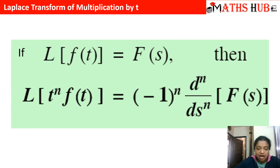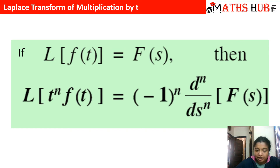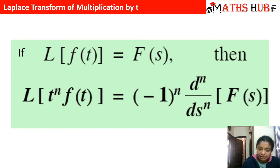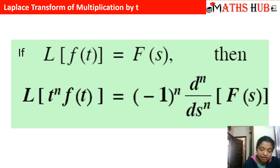Now the next property: the Laplace transform of multiplication by t. The rule says that if Laplace{f(t)} = F(s), then Laplace{t^n · f(t)} = (−1)^n times the nth derivative of F(s). That means multiplying by t once requires taking the first derivative, multiplying by t² requires the second derivative, and so on.